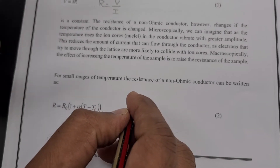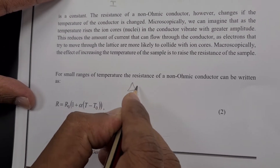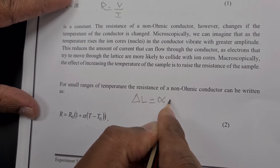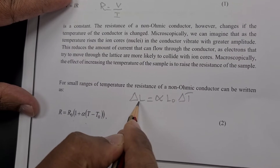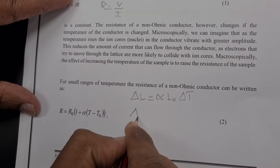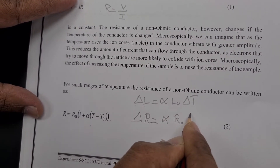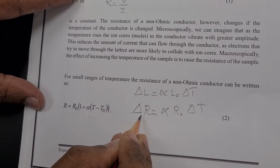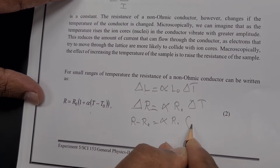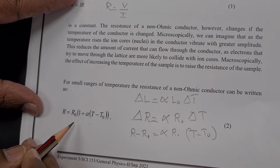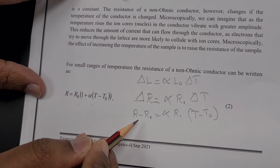R = R₀(1 + α(T − T₀)). If you want to write it easily, you can use the linear thermal expansion analogy from chapter 18: ΔL = αL₀ΔT. Wherever you have L, replace it with resistance. So, ΔR = αR₀ΔT. Here, ΔR is R − R₀, and ΔT is T − T₀. They give the equation in terms of resistance, but here I wrote it in terms of change in resistance.